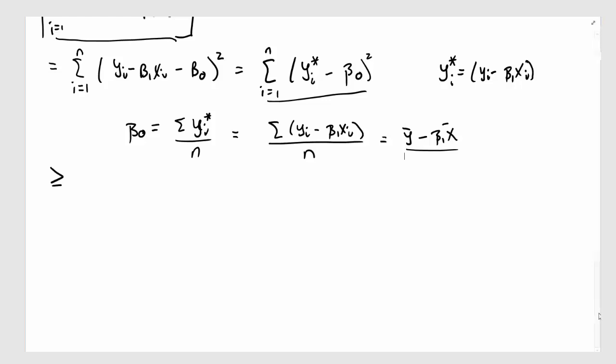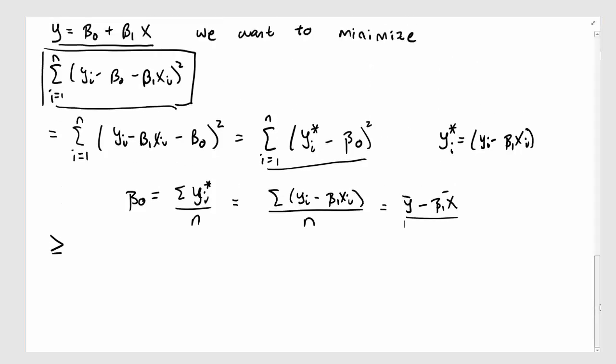So why don't I do that and I get summation i equal 1 to n, yi and now I'm simply going to plug in my new beta naught because I know that whatever solution beta naught and beta 1 are, they have to follow this relationship,